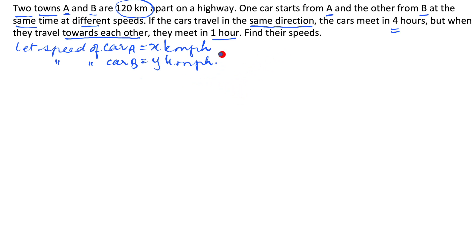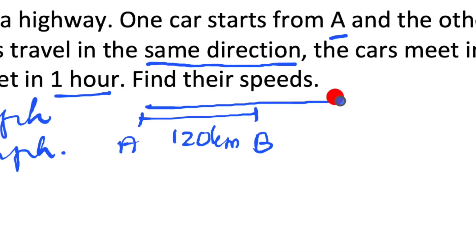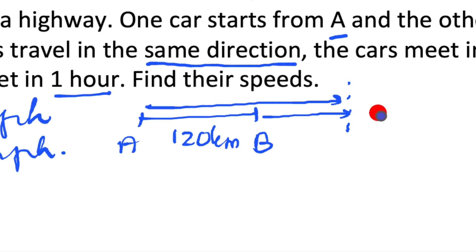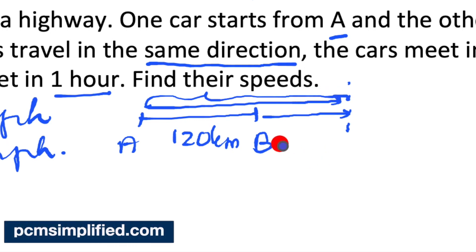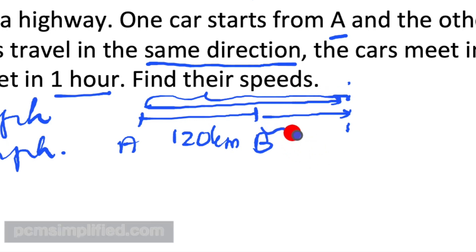They are 120 kilometers apart. This is town A and this is town B. Car A starts from here and car B starts from here — they meet somewhere in between, four hours later. When travelling in the same direction, car A covers this much distance and car B covers this much distance.